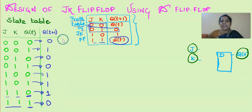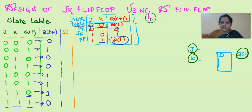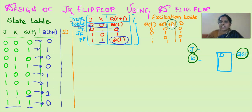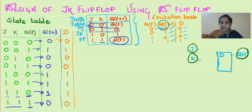So this is the state table that we require. For this particular requirement, we need to decide the inputs to the flip-flop. Here we are having only one input, which is D. To know that, we have to go for the excitation table of D flip-flop. According to this excitation table, if we want to change the state from 0 to 0, we need to give the D input as 0. So whatever the next state we require, the same state should be given as an input to the D flip-flop, meaning D equals the next state.